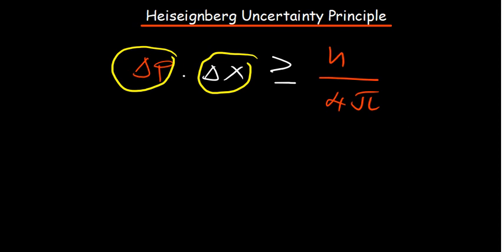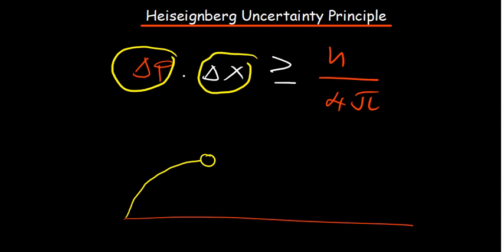For example, talk about an electron. Imagine you have an electron in your hand and you try to throw it. The fact that you know the mass of an electron doesn't necessarily prove that you'll be able to determine where it's going to drop off from. You're very uncertain about where it's going to drop off, but you are very certain about its mass.